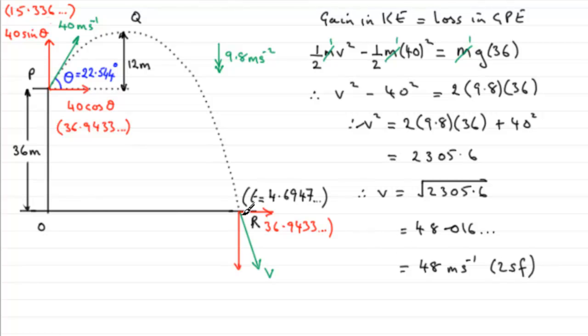Now, as I say, you could do it by the component version, and I'll leave it up to you to check that out. Use SUVAT for working out the vertical motion, get this velocity here, then use Pythagoras's theorem on these two components and you should end up with 48 meters per second. But I think you'll agree that this method was a lot quicker.